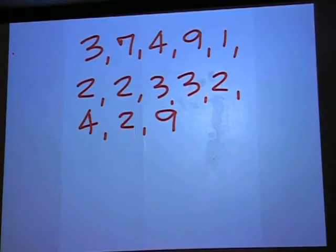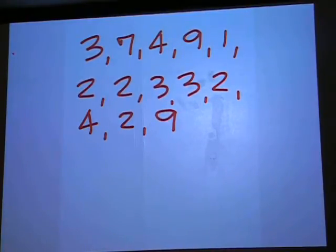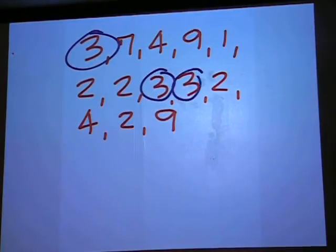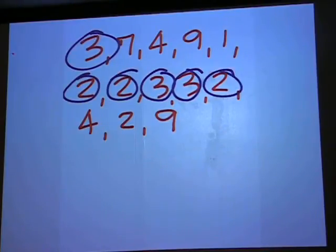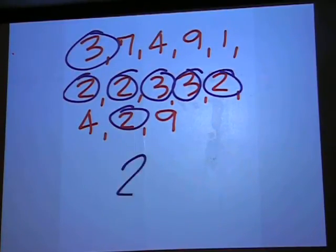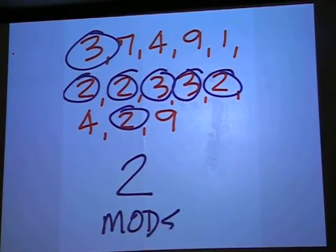The purpose of this problem is to demonstrate finding the mode. The mode is simply the number that shows up the most number of times. In this list, we have four 2's, so we have a mode of 2, since 2 shows up four times and everything else is 3 or less.